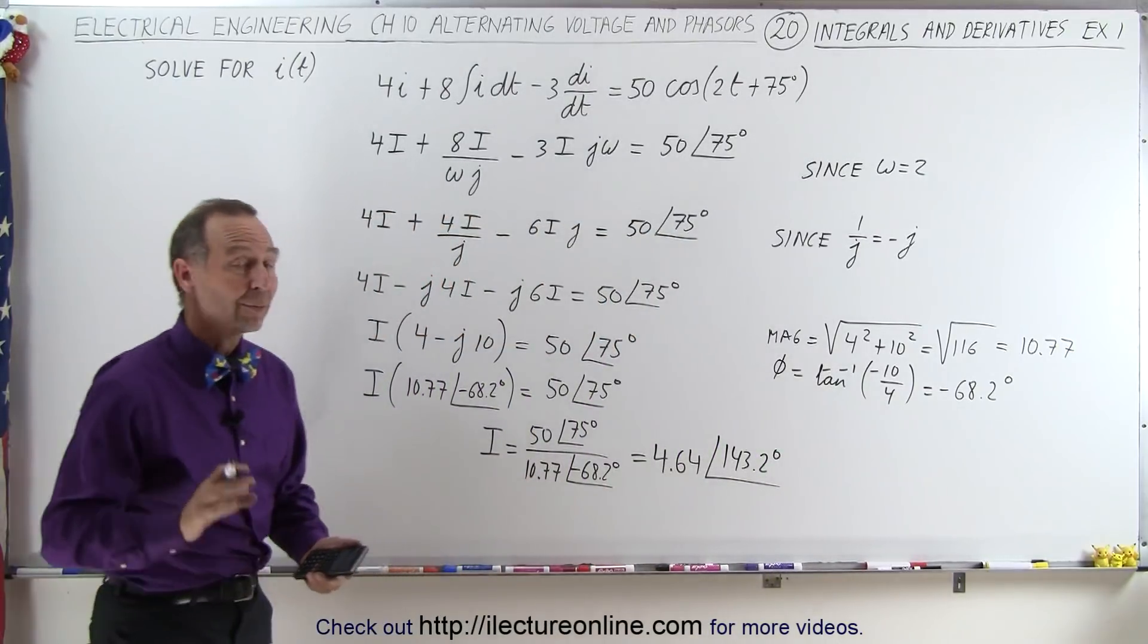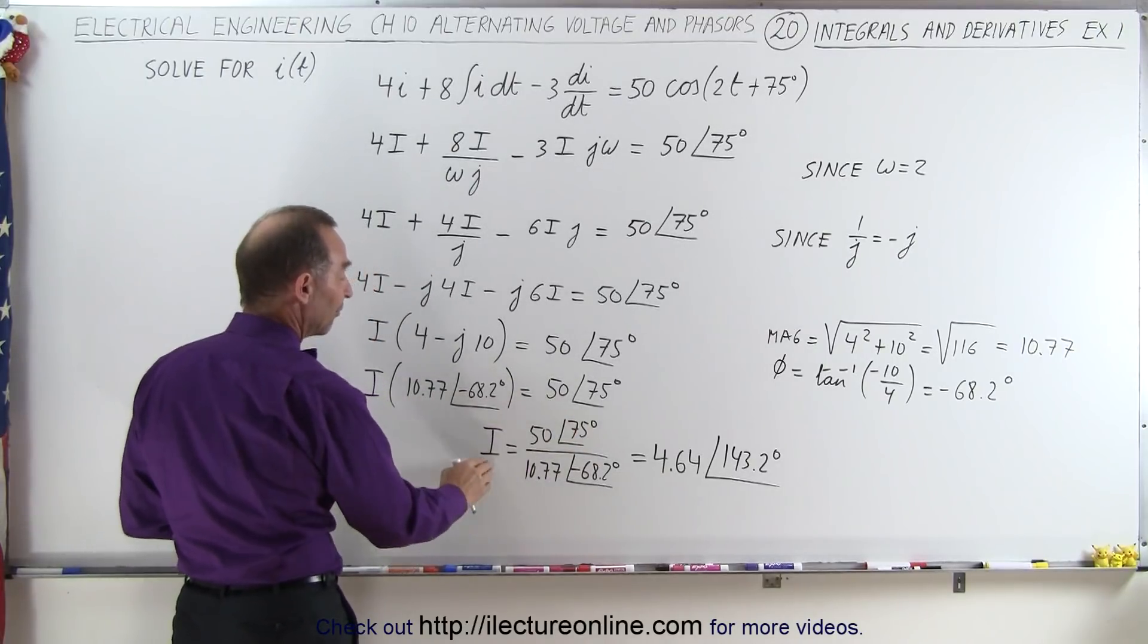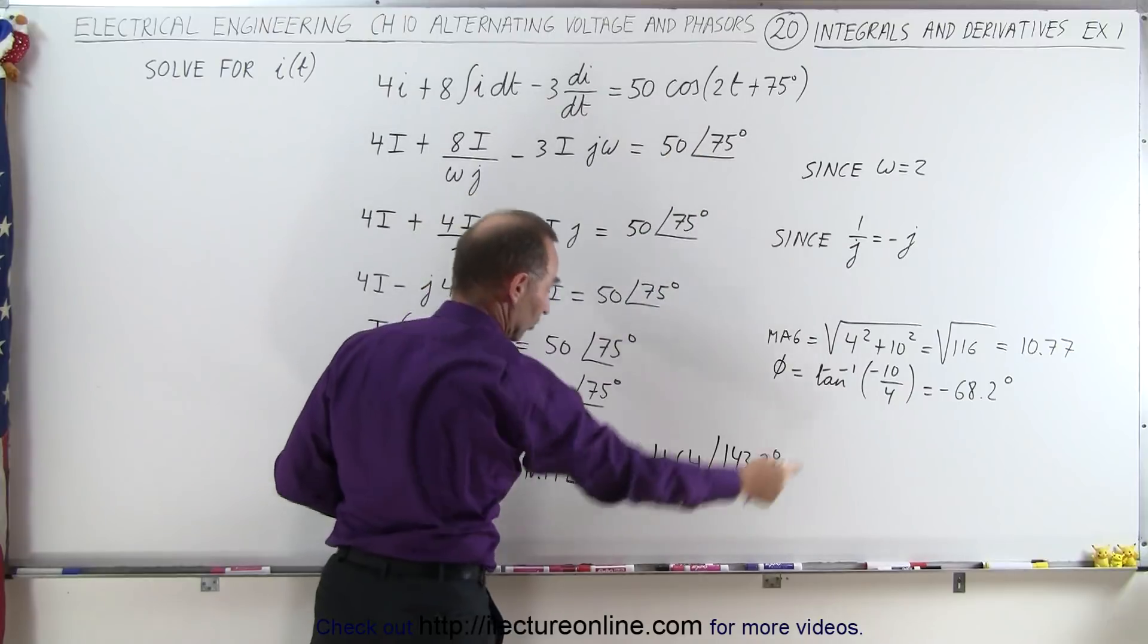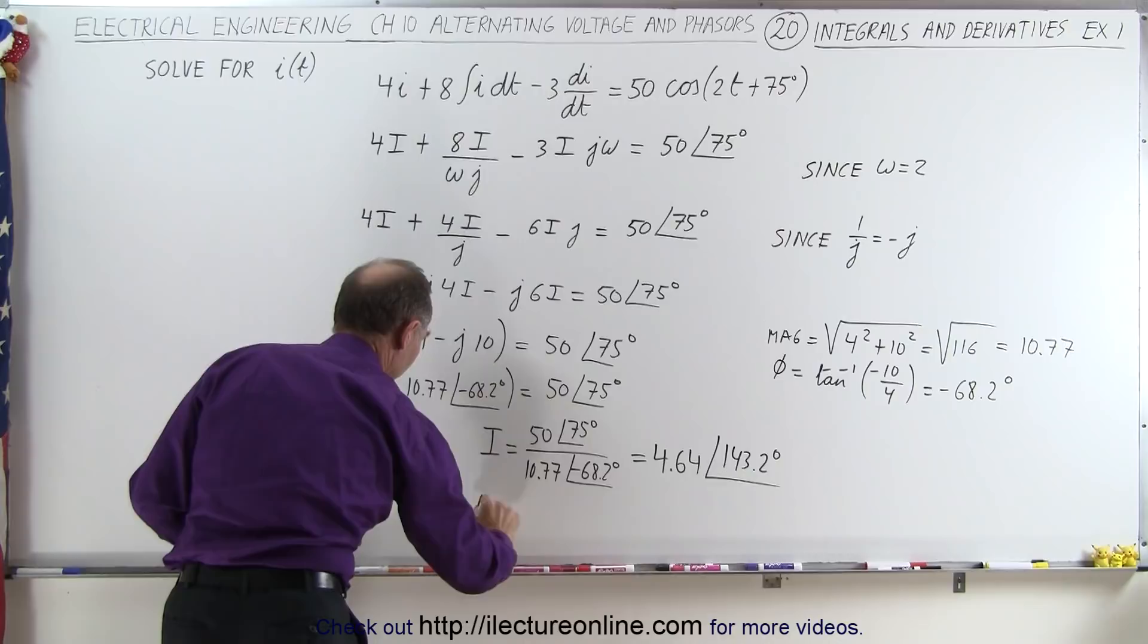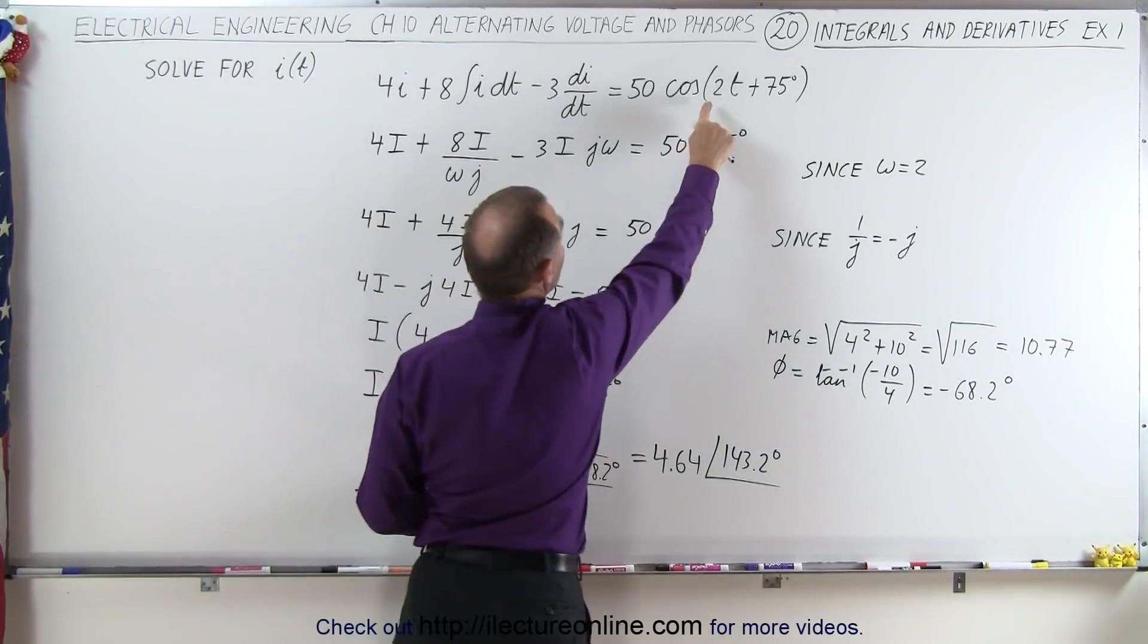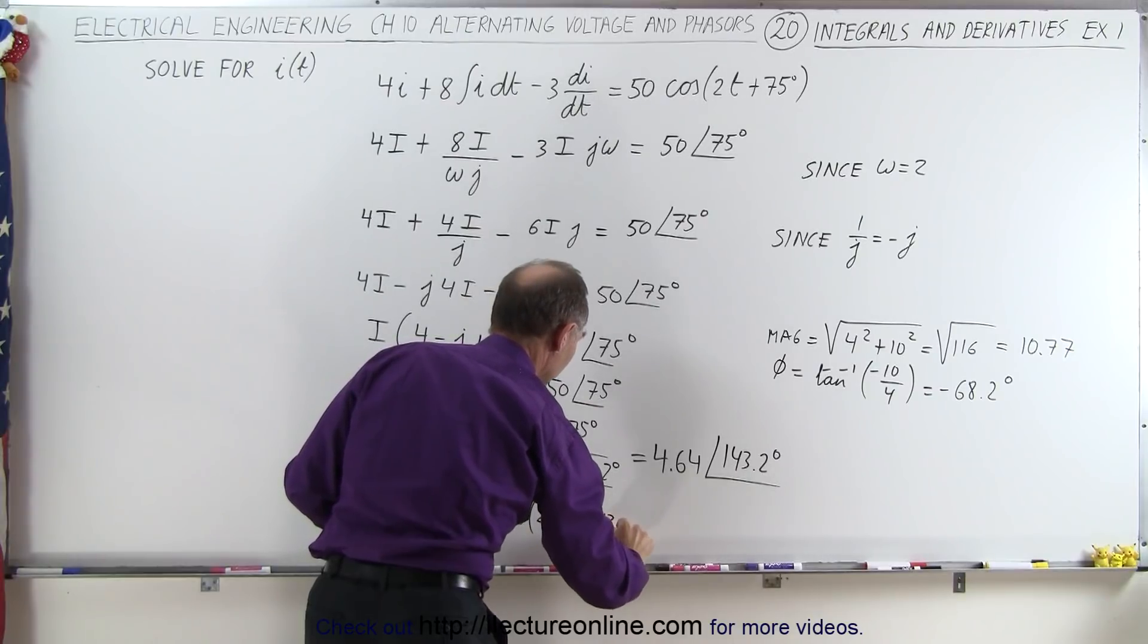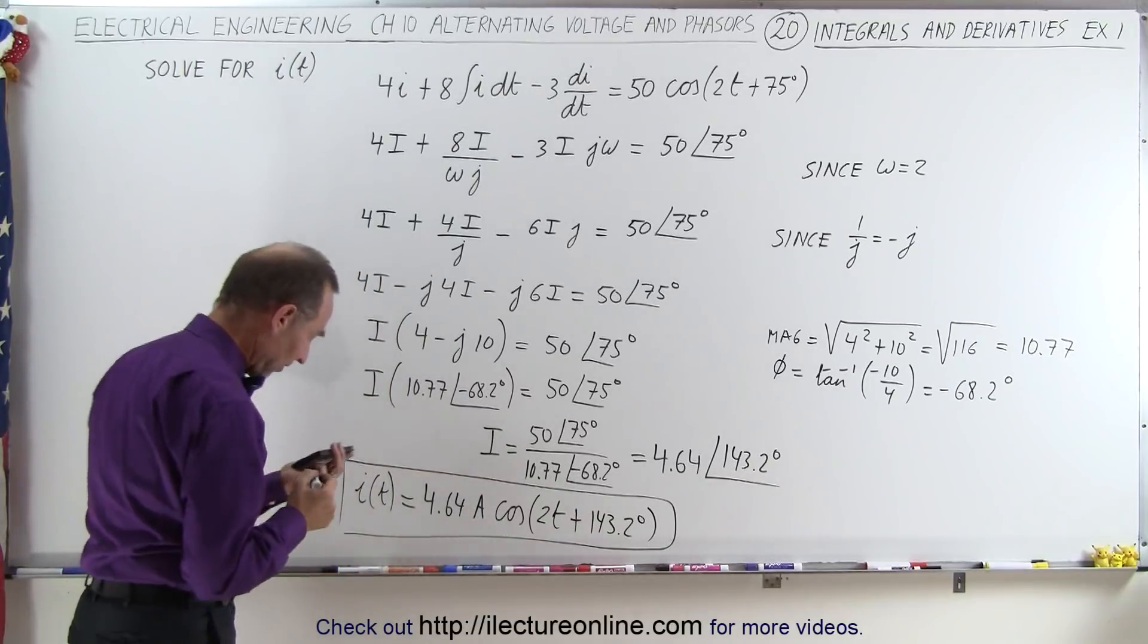And finally, if we now want to convert that back into the time domain, because this is in the frequency or phasor domain, we can now say that i, as a function of time, is equal to the general format is going to be the magnitude, which is known to be 4.64 amps, times the cosine of omega t. Now omega is 2, so that's 2 times t, and the phase angle would be a plus 143.2 degrees. And this then will be the current inside the circuit.